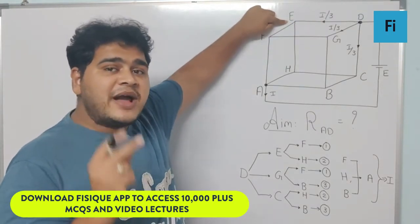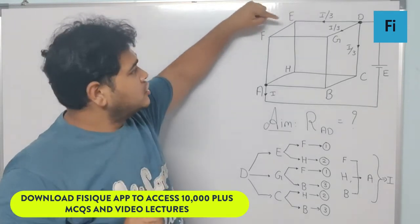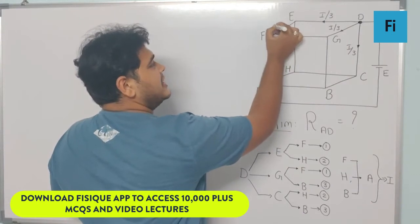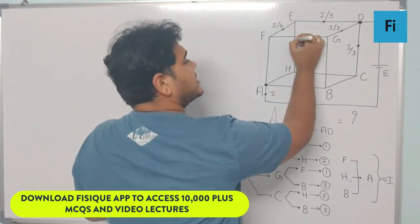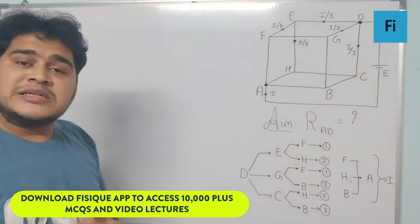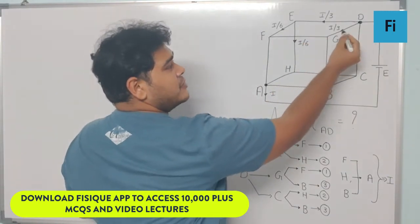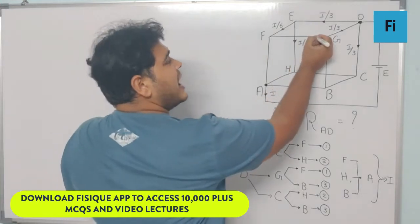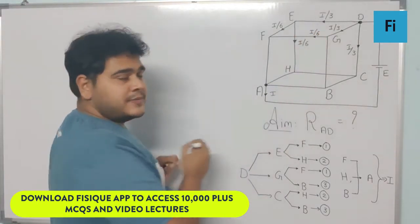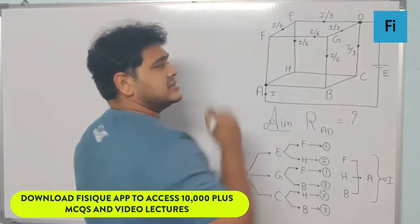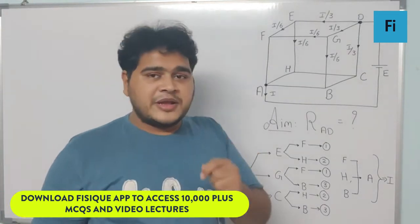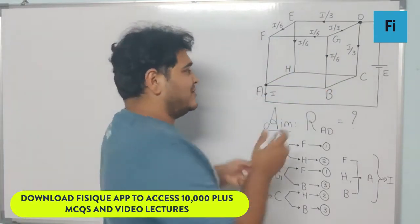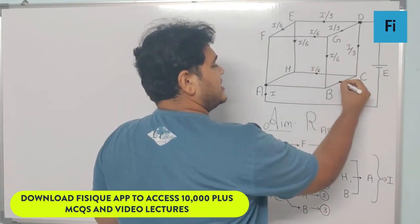When current I/3 reaches point E, it divides equally into two parts, so E to F and E to H each carry I/6. Similarly, point G receives I/3 and distributes I/6 each to F and B. Point C also receives I/3 and distributes I/6 each to H and B.